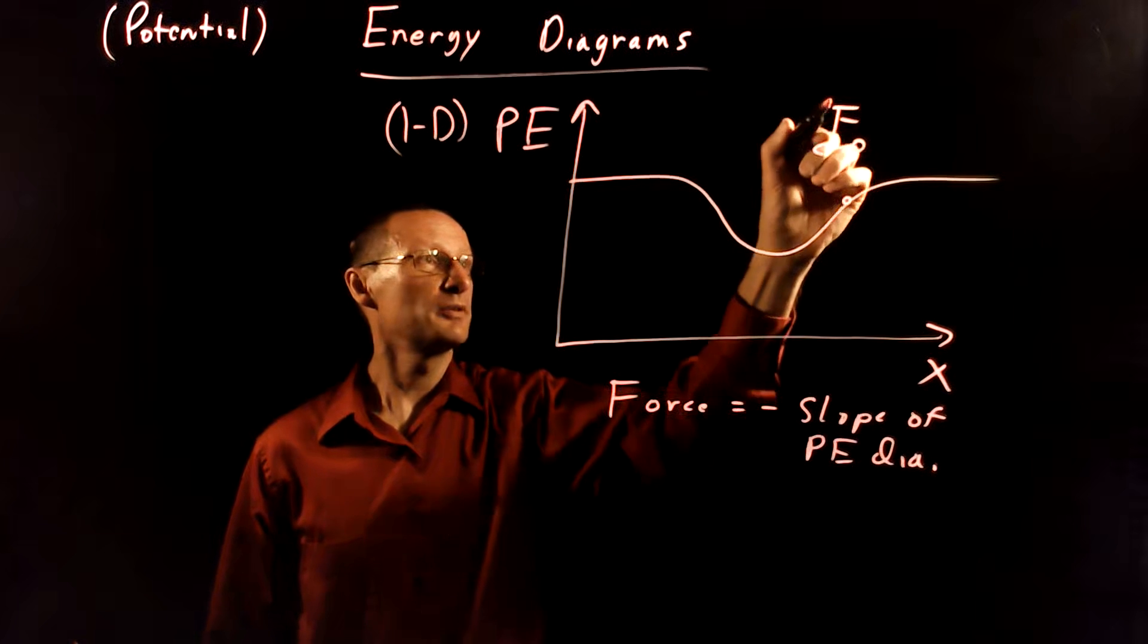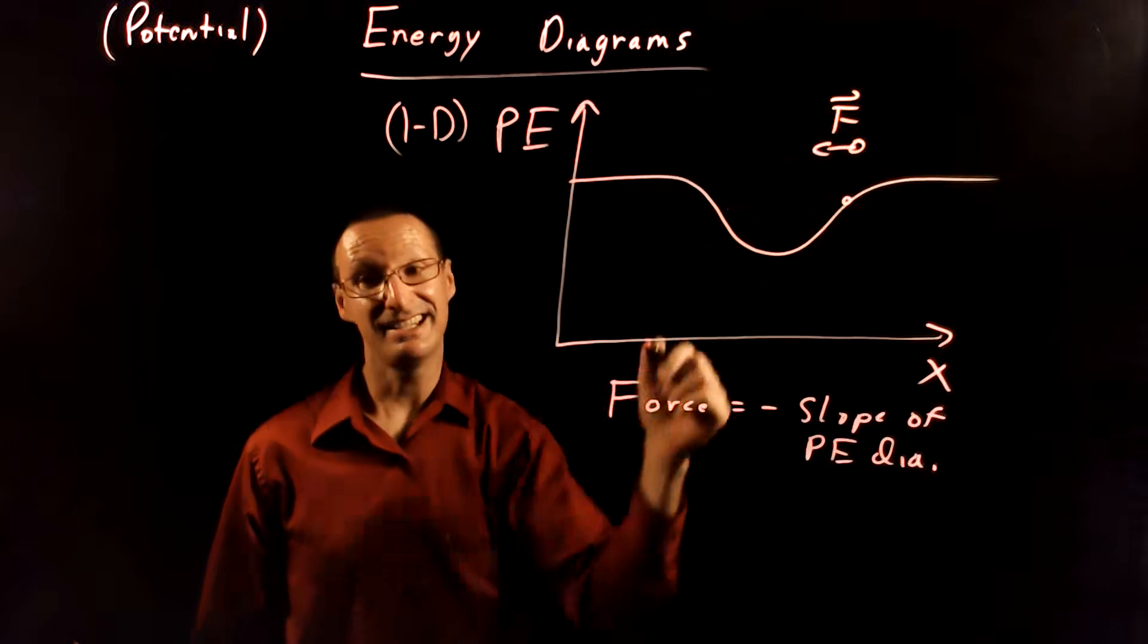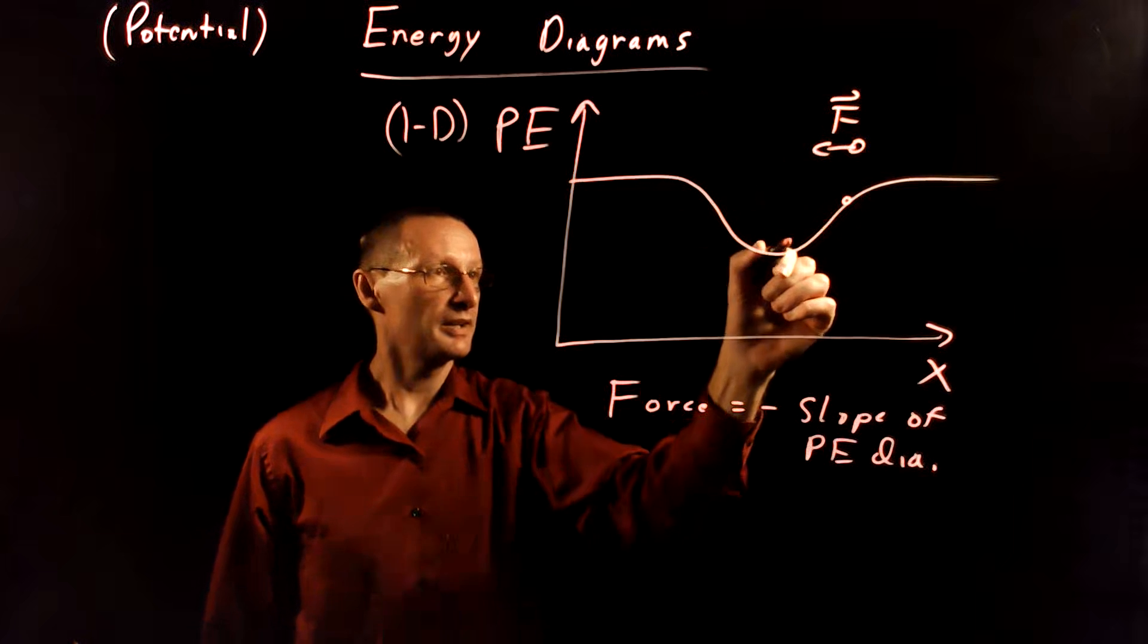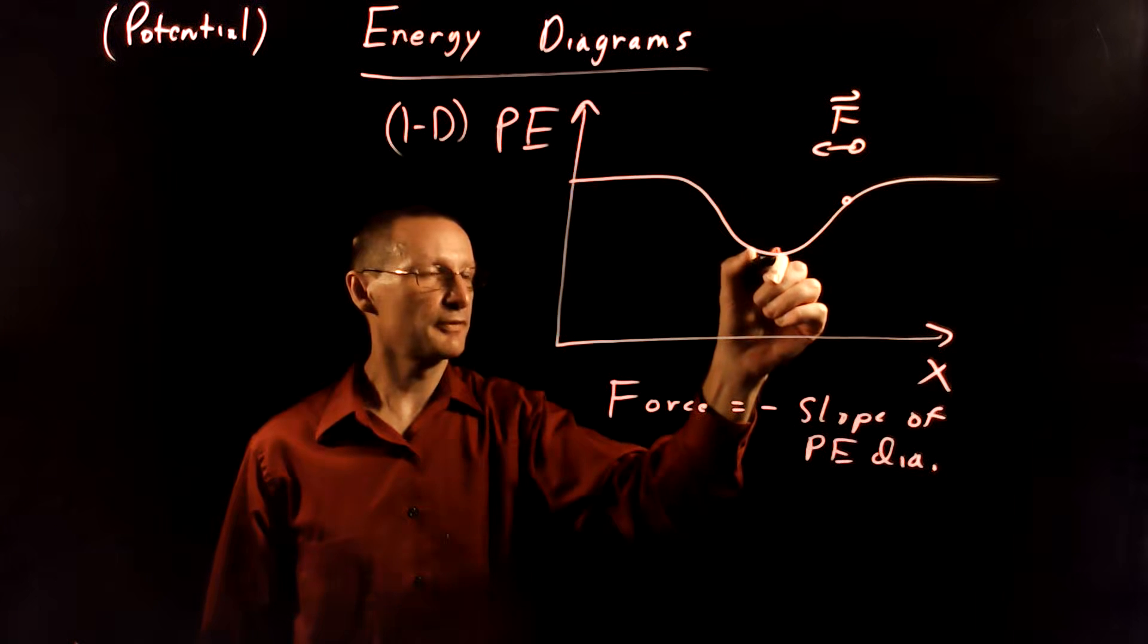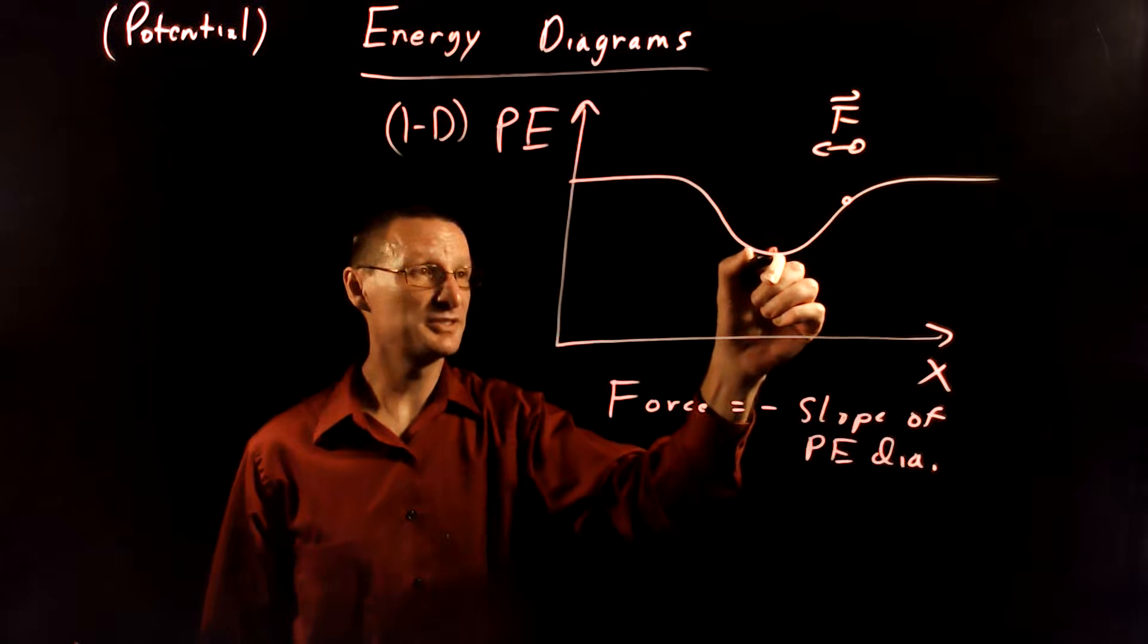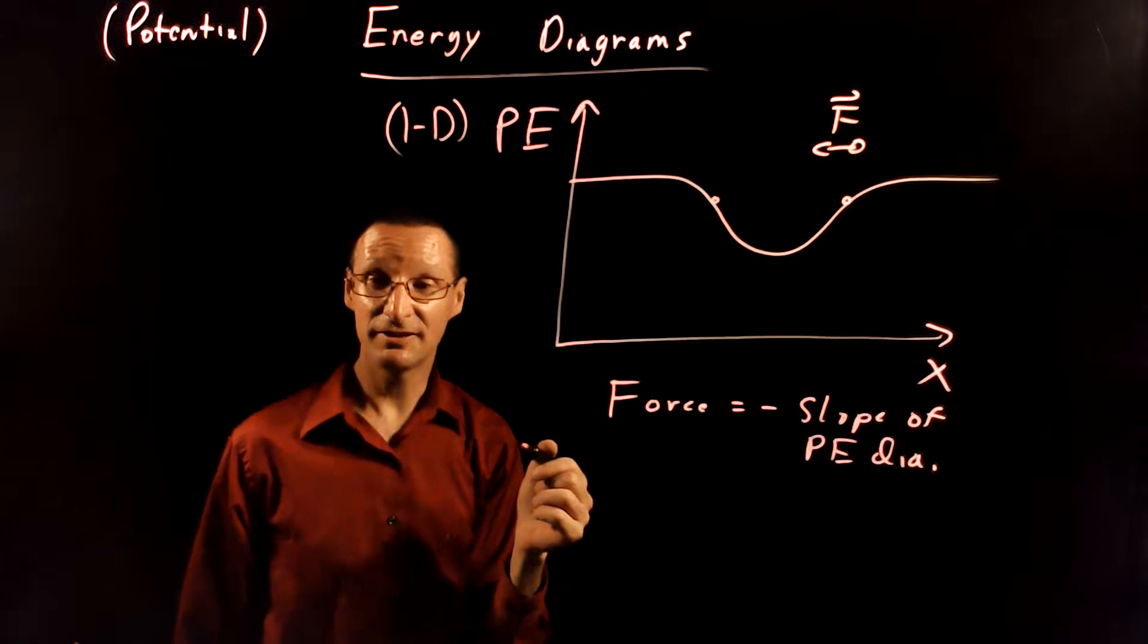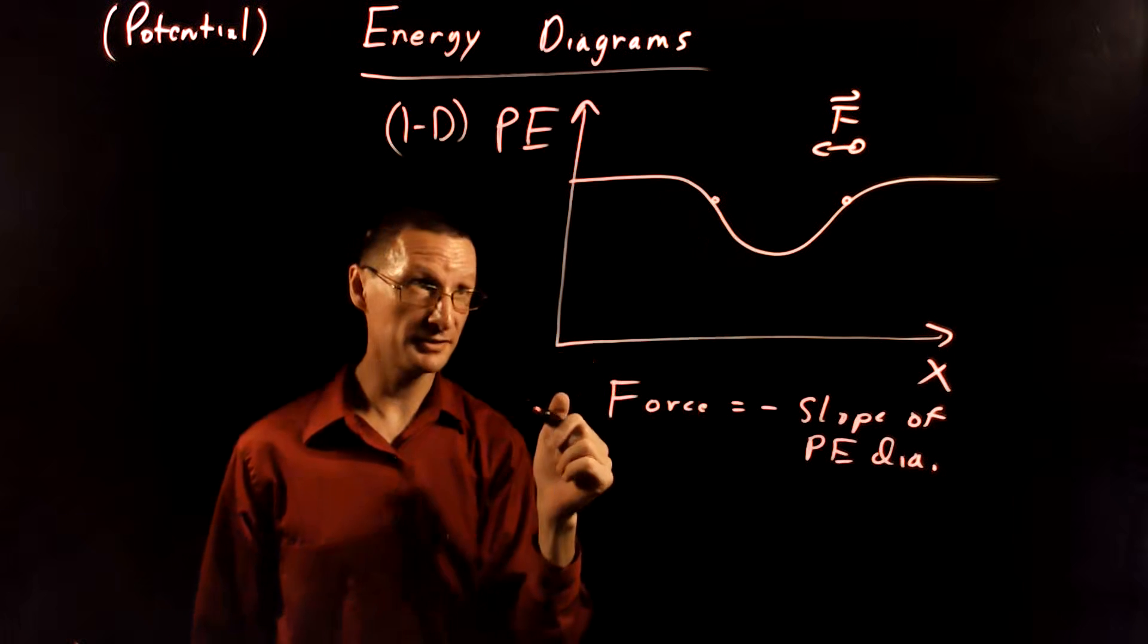So it does exactly what you'd think it would do. It rolls back down the hill. Now, at this point, as it rolls down, it's going to convert its potential energy into kinetic energy. And then it's going to roll back up to this point where its kinetic energy is converted back into potential energy.